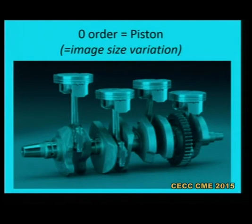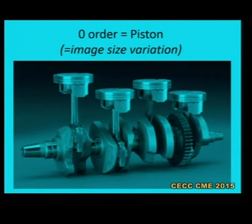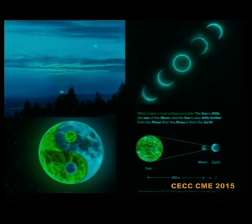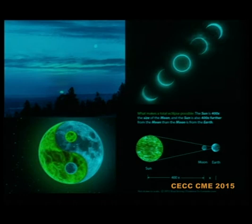Zero order is known as piston aberration — literally from the piston of an engine. When you look at an engine from the top and the piston moves, when it comes closer it appears larger, and when it goes away it appears smaller, so the image and object do not match. This is a quantitative variation, not qualitative, and is often noted as the magnitude difference between image and object. The piston aberration is why the sun and moon appear equal in size from earth, although the sun is 400 times larger but also 400 times farther away.